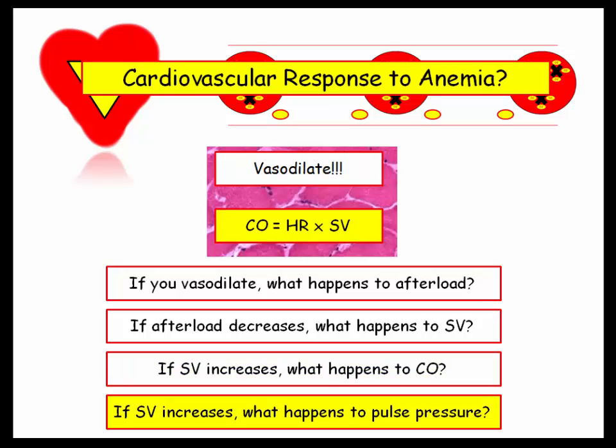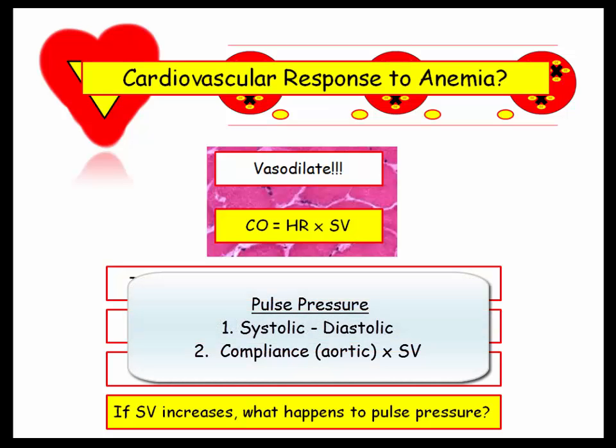Finally, if the stroke volume increases, what happens to pulse pressure? The pulse pressure does require a bit of explanation. Besides calculating pulse pressure as systolic minus diastolic, you can also define pulse pressure as compliance times stroke volume. Compliance comes from the aorta, and although rubbery and elastic, the aorta has fixed compliance. So with increased stroke volume from vasodilation and beta-1 stimulation of the ventricle, the systolic pressure rises proportionally to diastolic, and thus the pulse pressure rises.